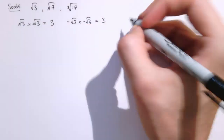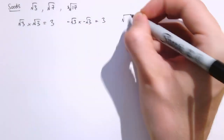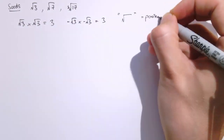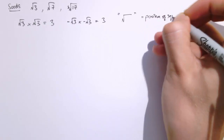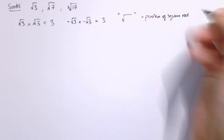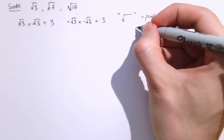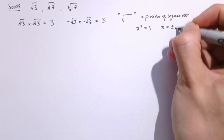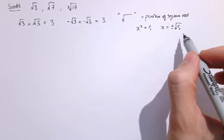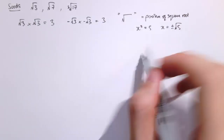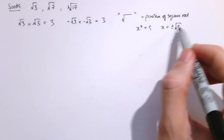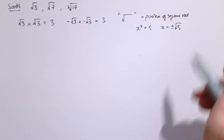We should note that this symbol doesn't just mean the square root — it actually means the positive square root. Which is why when you solve an equation like x squared equals 5, you write x equals plus or minus the square root of 5, because x could be either the positive square root of 5 or the negative version, minus the square root of 5.